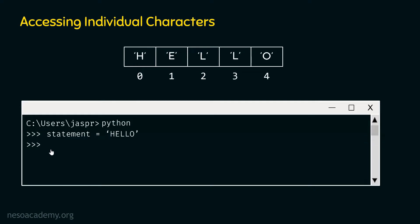After hitting enter, we are ready to type a new command. Let's type: statement, opening square bracket, zero, then closing square bracket. With this command, we can access the first character of this string. Since we passed index zero in these square brackets, we are accessing the first character, which has the unique number zero. In this way, we can access individual characters of this string.